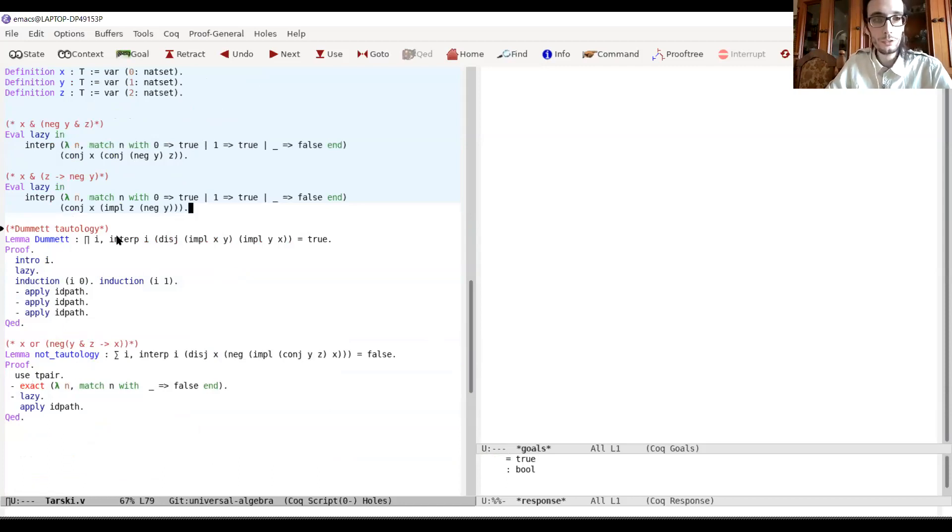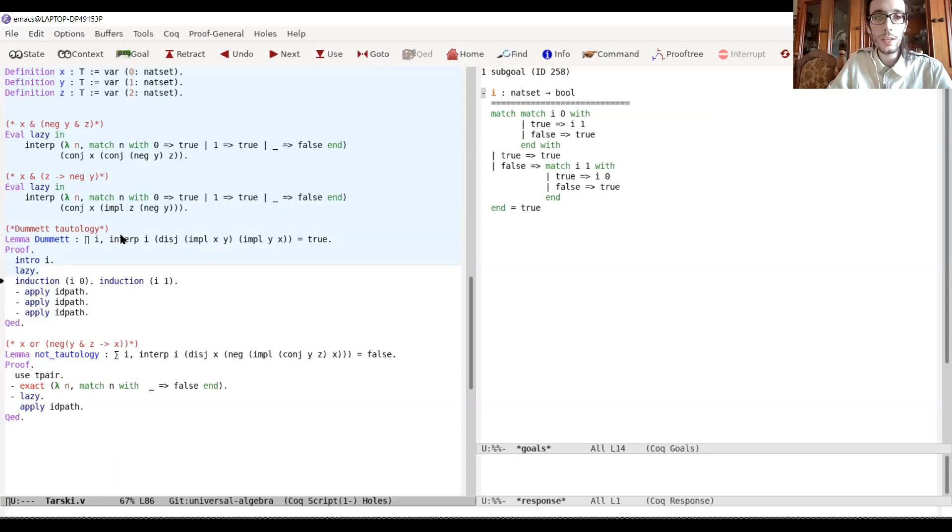And we can also prove that a formula is a tautology. So, for instance, I want to show you that Dummett's Law is a tautology. So, for x and y, x implies y or y implies x is always true. So, let's start an interactive proof environment. We just need to introduce our valuation. Then we make UniMath perform a lazy evaluation on our goal. And we can see that the only thing we have to do is to check the values, the cases of values for x and y. And then we have nothing to do. We just apply idpath to each sub-goal and we are done.